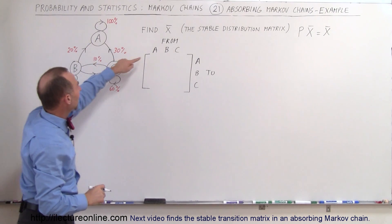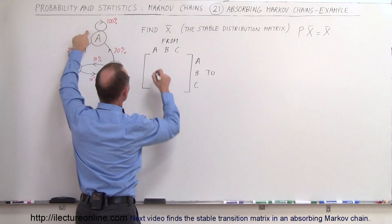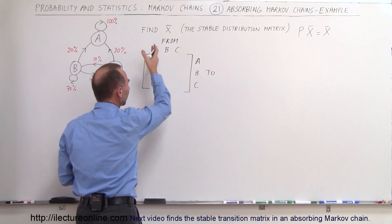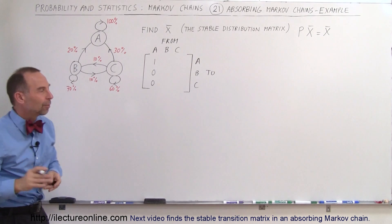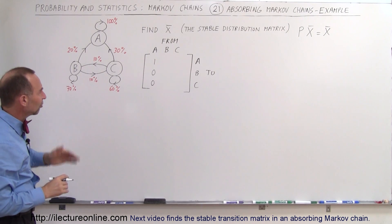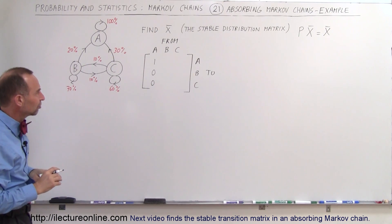From A to A we have 100%, that is 1. From A to B would be 0, and from A to C would be 0. So you can see that's already the characteristic of an absorbing Markov chain, or an absorbing transition matrix of an absorbing Markov chain.